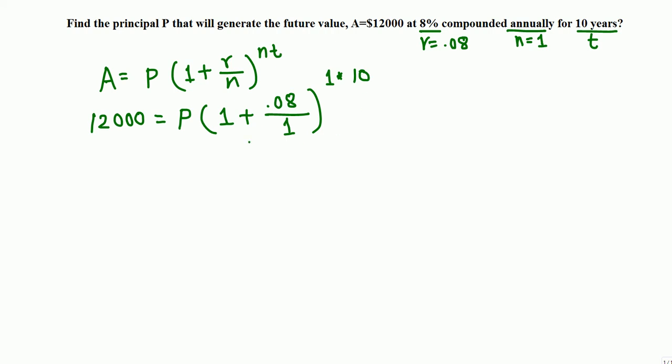Now we calculate this number then isolate P to find P. So $12,000 equals P times, inside 0.08 over 1 is just 0.08, so 1 plus 0.08 is 1.08 raised to 10. And we have P times this number, so to isolate P we divide both sides by this number. So P equals $12,000 divided by 1.08 raised to 10.